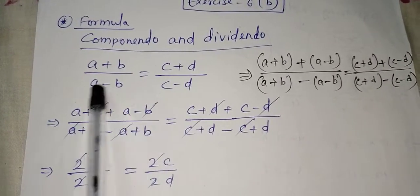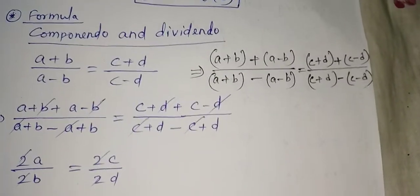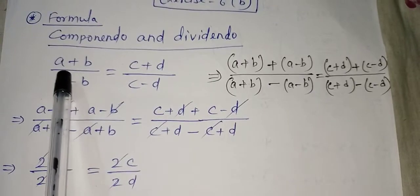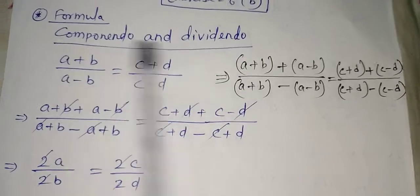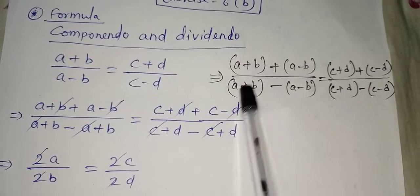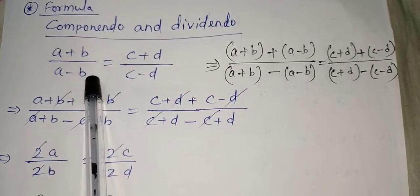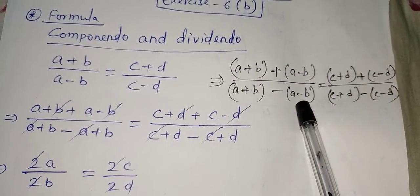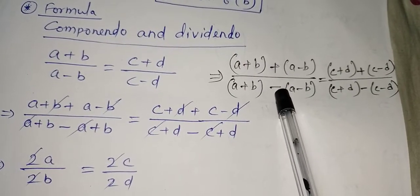Suppose you have (a + b)/(a - b) = (c + d)/(c - d). If we apply componendo and dividendo, what we do is take the numerator (a + b) and write it at the top and at the bottom. Then we take the denominator (a - b) and also write it at the top and at the bottom. At the top we put plus in the middle, and at the bottom we put minus in the middle.